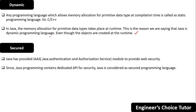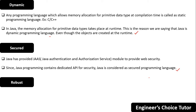Since Java contains dedicated APIs for security, it is considered a secured programming language. JAAS stands for Java Authentication and Authorization Service and is a module to provide web security.